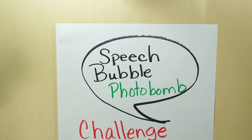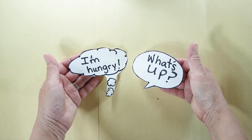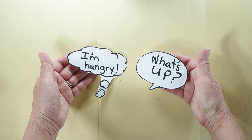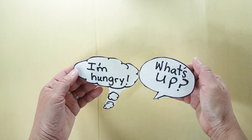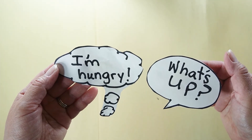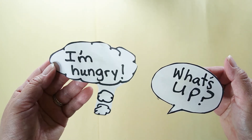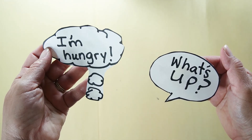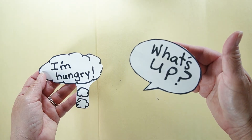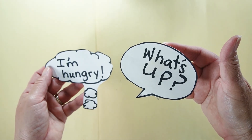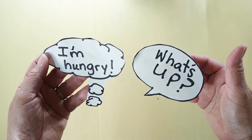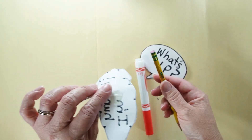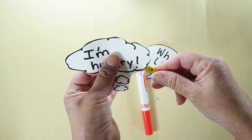Choice number three is the speech bubble photo bomb challenge. In this challenge you're going to create either a thought bubble or speech bubble, or both. Make sure it says something in it and you can see it very clearly. In this case I have 'I am hungry' with a thought bubble and 'what's up' in a speech bubble. We're going to bring something to life or make something funny.